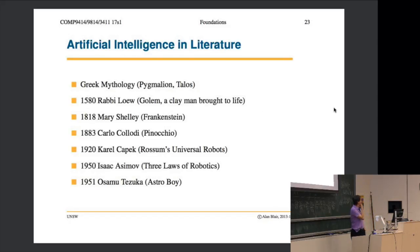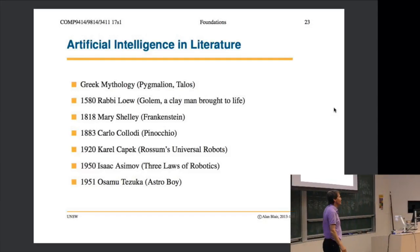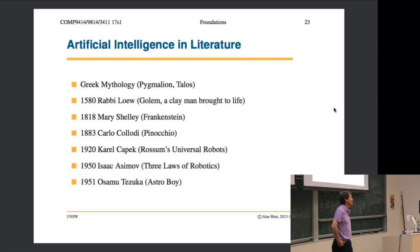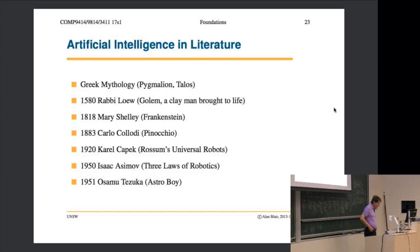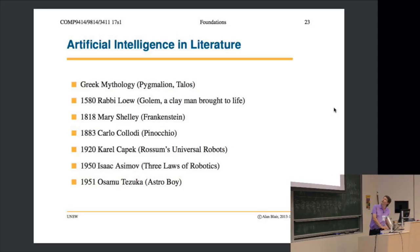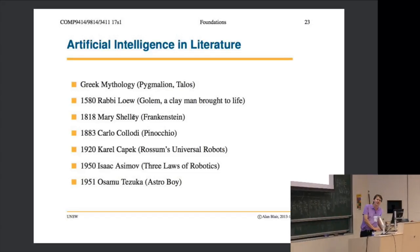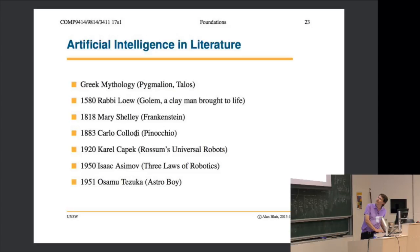I think it's interesting to study AI in literature. Going back to Greek mythology, there are these stories about trying to create artificial life. We go back to Pygmalion and Talos, then Golem, then Mary Shelley's Frankenstein in the 19th century. Carlo wrote Pinocchio, which was a puppet that was brought to life.